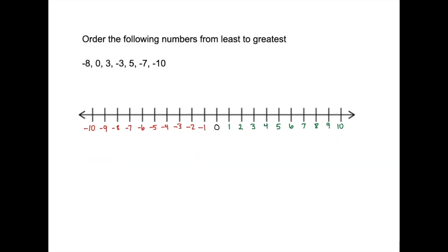Let's use a number line to order the following numbers from least to greatest. The first step is to plot the numbers on a number line. We have negative 8, 0, positive 3, negative 3, 5, negative 7, and negative 10. Now you can easily see the smallest are the farther left and the largest are the farther right, and we can write them in the order that we see them.